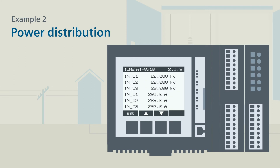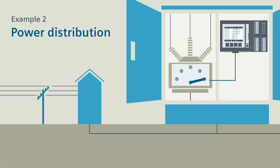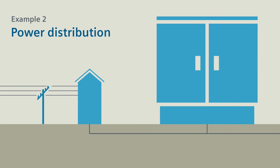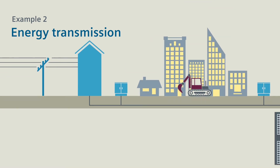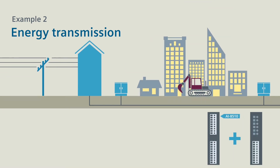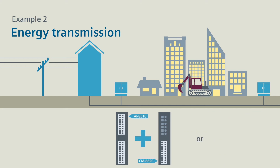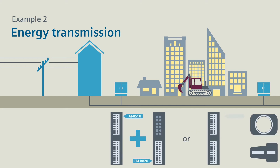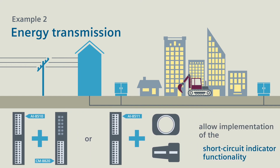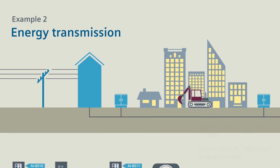You can then also query and check analog measured values on the display. In the secondary substation, CCAM A8000 also monitors the low voltage side of the distribution transformer and issues commands to the transformer's tap changer based on the acquired measured values. With the AI8510 module in combination with the CM8820 module, or the AI8511 module in conjunction with low power current transformers, you can also implement the short circuit indicator functionality.